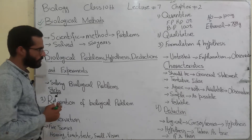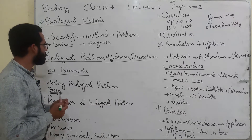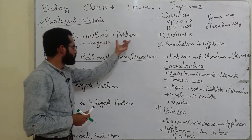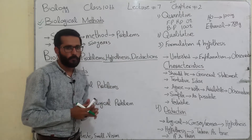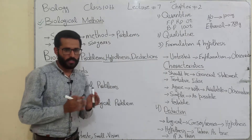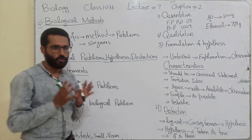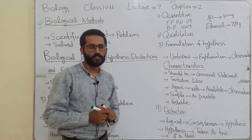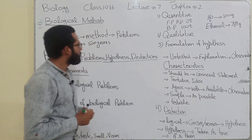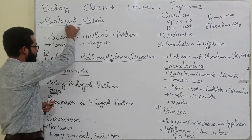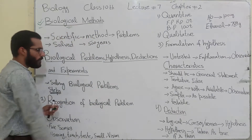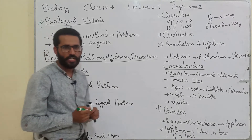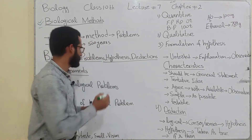Actually, biological method is the scientific method to solve the problems. A scientific method to solve the problem is termed as biological methods. The biological methods help us — nearly about 500 years of biological methods have helped us solve problems.